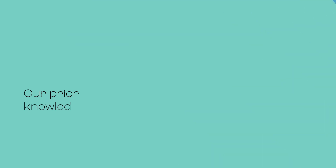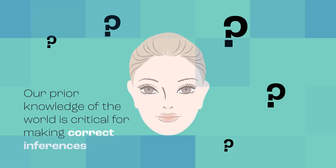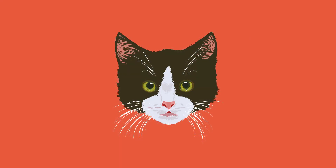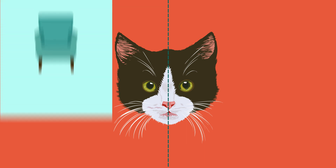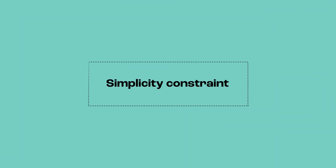Our prior knowledge of the world is critical for making correct inferences. For example, symmetry occurs throughout the natural world. Birds, mammals, fish and insects are all mirror symmetrical, and we know that each half of these creatures looks the same as the other half. The same applies to human-made products — think of chairs, cars and aeroplanes. Applying a simplicity constraint will almost always lead to the correct interpretation.